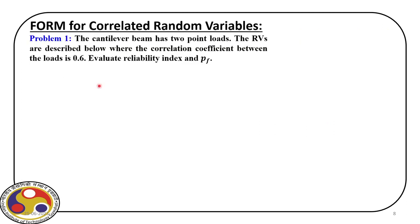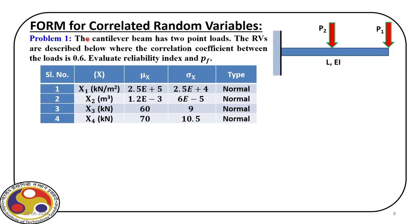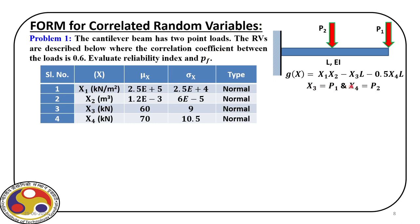Consider an example of a cantilever beam with two point loads, where we consider plastic design at the support. The limit state has the form x1 times x2 minus x3 times L minus 0.5 times x4 times L, where x3 and x4 represent the two loads p1 and p2 acting on the beam. We have four random variables x1, x2, x3, x4, with the two loads having a correlation coefficient of 0.6.